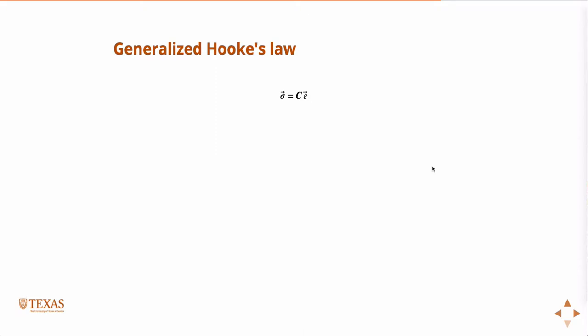We know that stress is a tensor and strain is a tensor, so that thing in the middle also has to be a tensor. In general it's a fourth order tensor, and the fourth order tensor has 81 components. But if we make assumptions about planes of symmetry, we can reduce that number drastically.